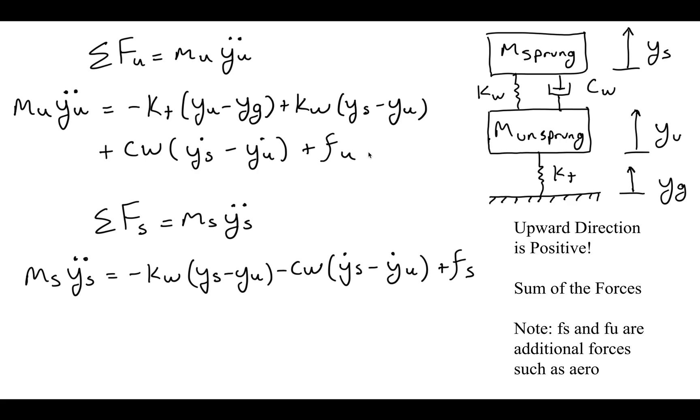One of the things we always like to do in vibrations when we're coming up with the equations of motion is take the sum of the forces. Here we consider the upward direction to be positive. Note that in these equations I have the variables fu and fs written in, these are additional forces such as aerodynamic forces experienced on the system. For the purposes of this analysis we assume they're zero just to show an example of the suspension by itself. Basically you want to determine on each of those masses, both unsprung and sprung, what's pulling energy away from the system and what's adding energy.